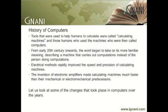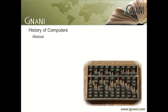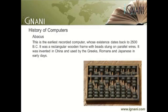Let us look at some of the changes that took place in computers over the years. The Abacus: the first actual calculating mechanism known to us is the abacus, which is thought to have been invented by the Babylonians sometime between 1000 BC and 500 BC, although some pundits are of the opinion that it was actually invented by the Chinese. The word abacus comes to us by way of Latin as a modification of the Greek word abacs, which the Greeks may have adopted from the Phoenician word meaning sand, or the Hebrew word meaning dust.